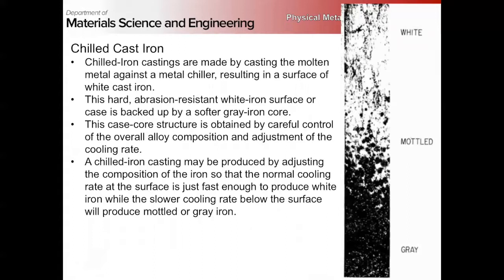A cool compromise is chilled cast iron. White iron needs to be cooled very quickly, and if you cool it more slowly you get gray iron for a lot of the same compositions. Chilled cast iron is essentially casting into a chilled or cooled mold. You get white cast iron at the surface because of the very high cooling rate, and then in the middle of a thick casting where you have slower heat transfer, you have gray iron. So you've got a very strong outer shell of white iron with a core of a little more ductile gray iron.